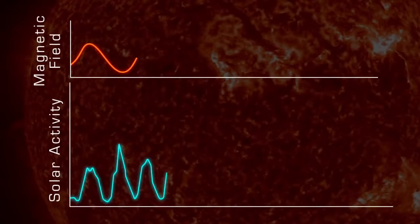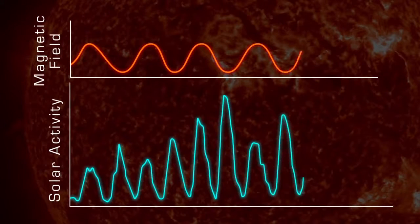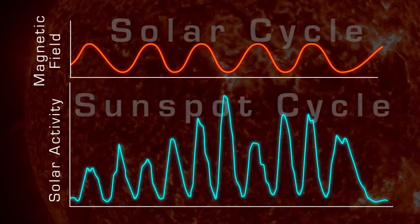The Sun's 11-year cycle is a symptom of a longer 22-year cycle called the solar cycle, or Hale cycle, which affects the Sun's magnetic fields.